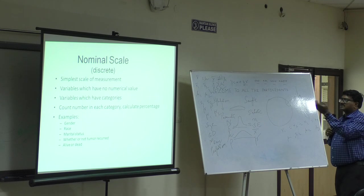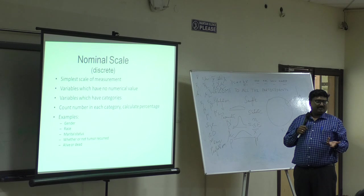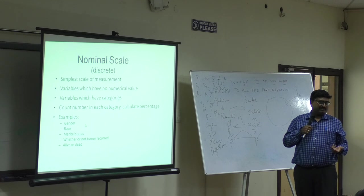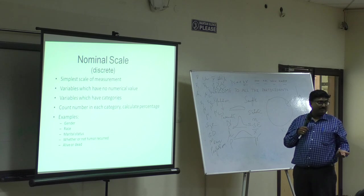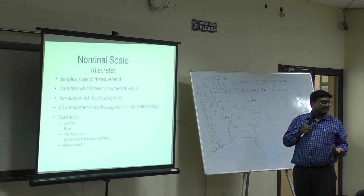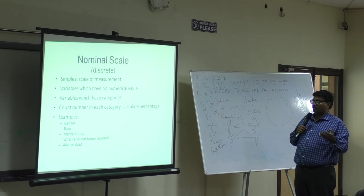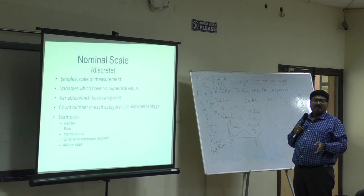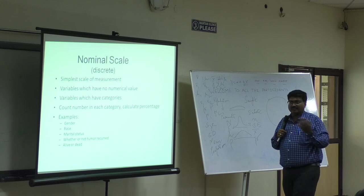Now we have some examples coming. Gender - it is nominal. Race. Are you an Aryan? Are you a Dravidian? Are you an Asian? European? An American? Or a Fiji guy? Or an African? I mean, it is only classification. Your marital status - married or unmarried. You are 25 years or a golden jubilee married - no. Married or not. And then you are talking about whether the tumour has reoccurred. There can't be a vegetative state. You are alive or dead. There can't be a between coma stage here.